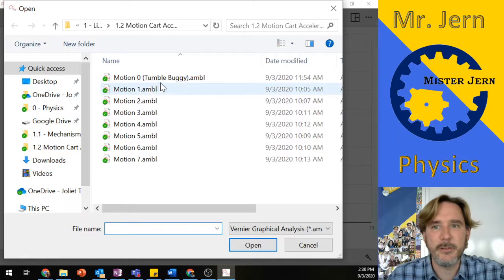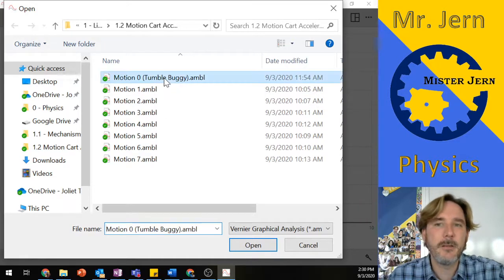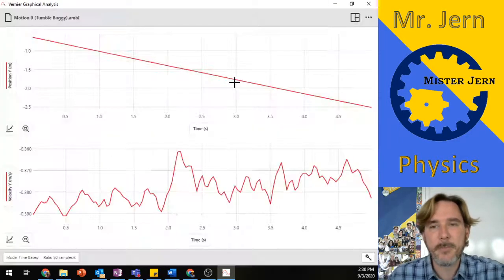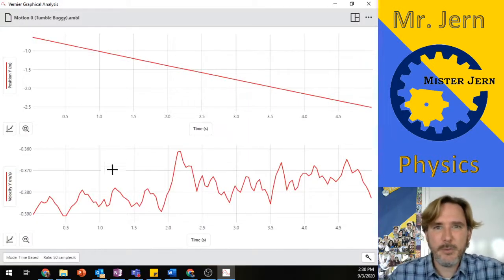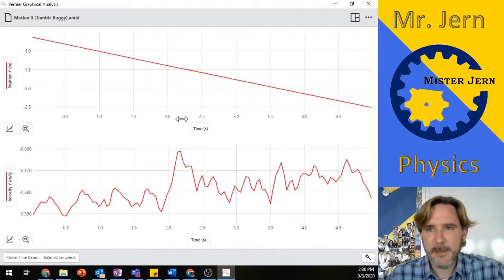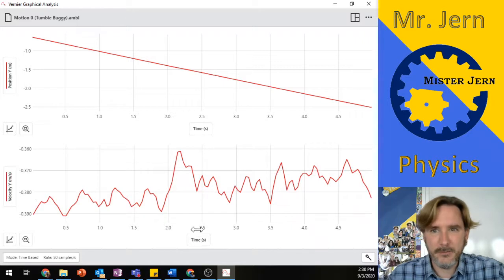You'll have these other choices later too to download, but for now, tumble buggy. It'll take a second to open it up, and you can see we have two graphs here, a position versus time and a velocity versus time graph.